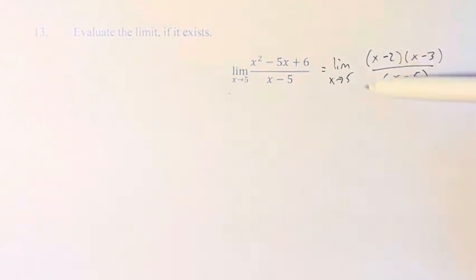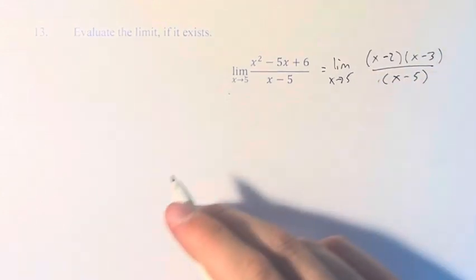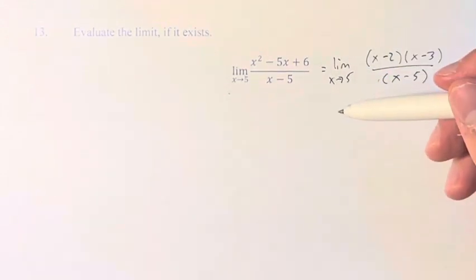And looking at this, we can see that there's nothing to cancel. So there's no way for us to just plug in 5 directly into this function and see what happens. So instead, what we have to do is look at the one-sided limits and see the values that they converge to.